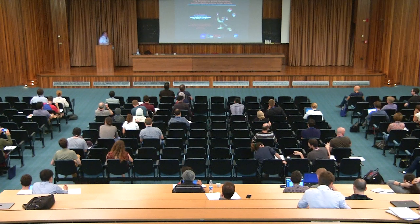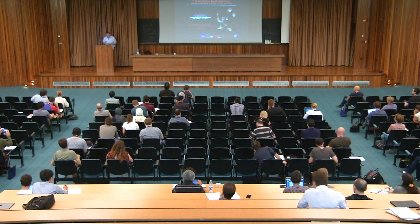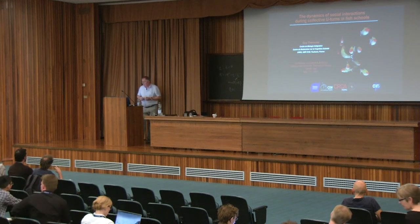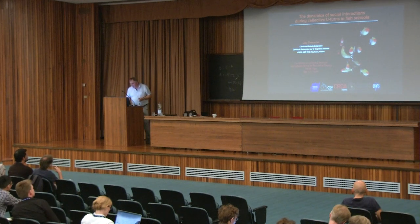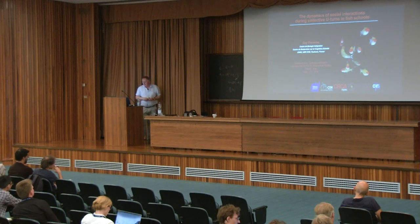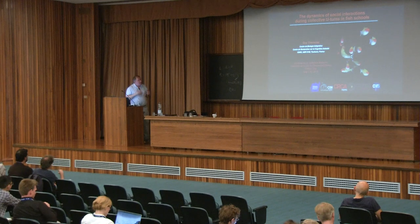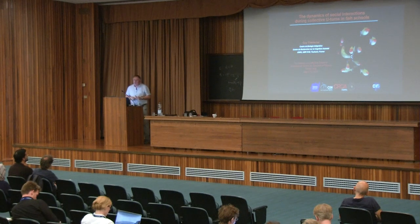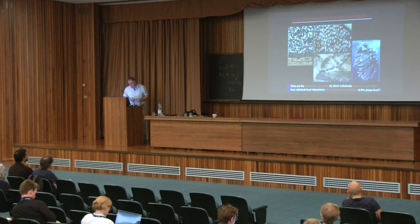I will focus my talk on a very simple example of collective behavior that happens in fish when they decide collectively and spontaneously to change their direction of motion. This is probably not as spectacular as many other forms of collective behavior that can be observed in nature and presented at this meeting, but at least it can be investigated quantitatively in controlled conditions, and I hope you will see that we can learn a lot about the way individuals interact with each other and how collective decisions emerge from these interactions.